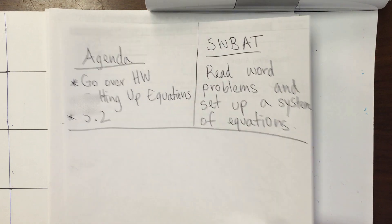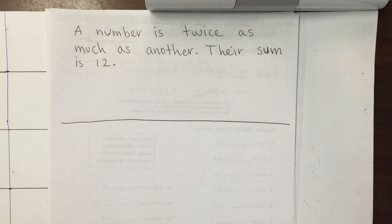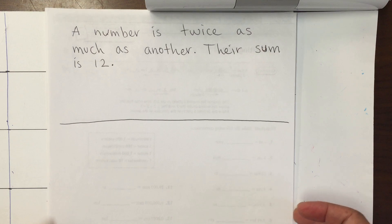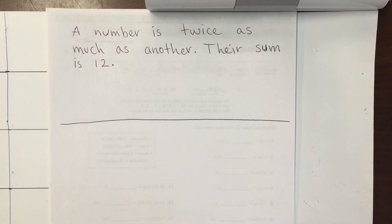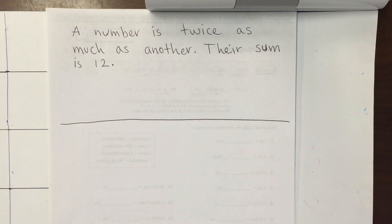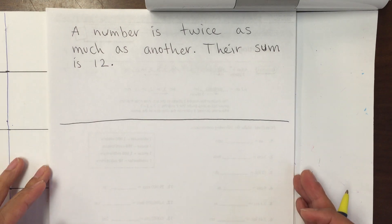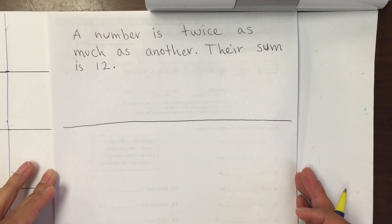Okay, so we have a problem here. It says a number is twice as much as another. Their sum is 12, and we're going to set up the equations. But I want to do two things before we even start this — the first is to review some vocabulary.